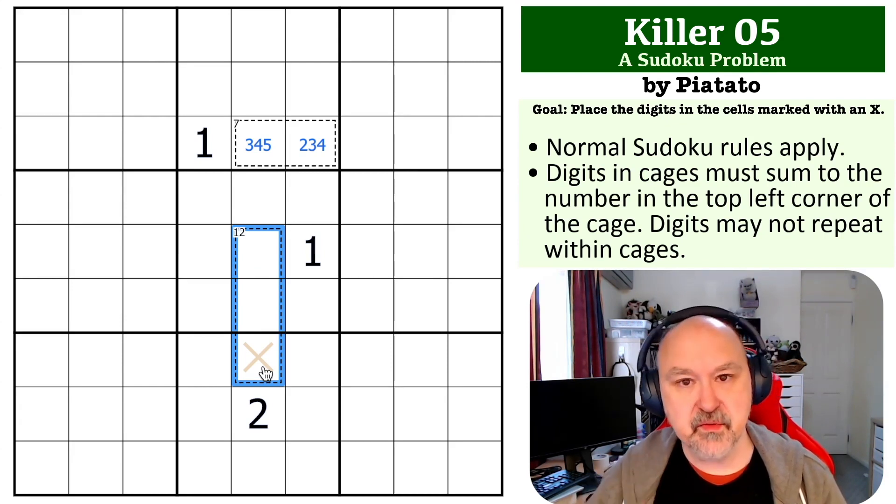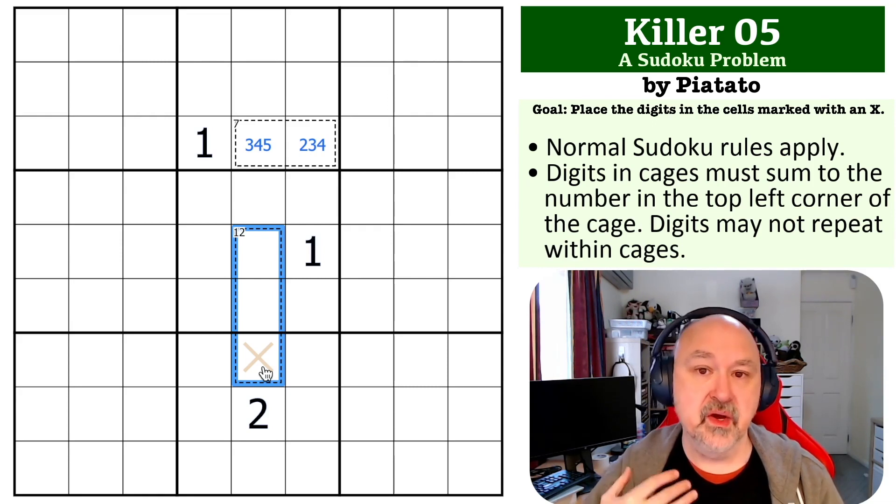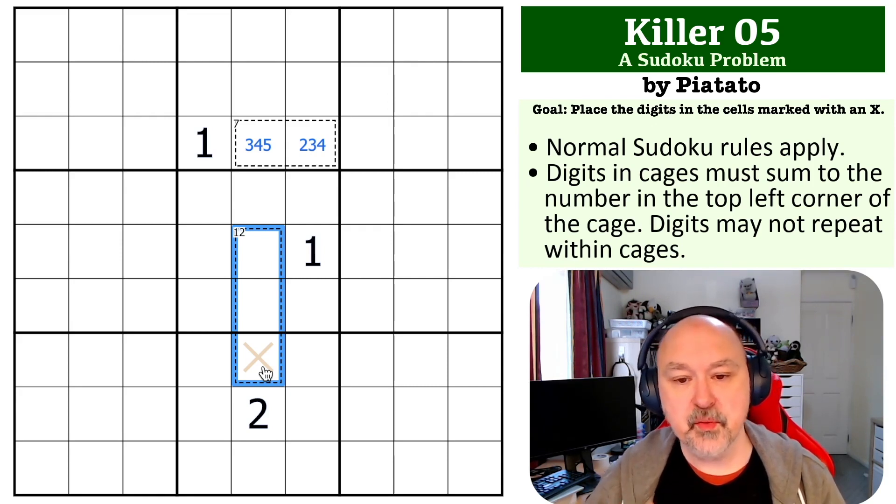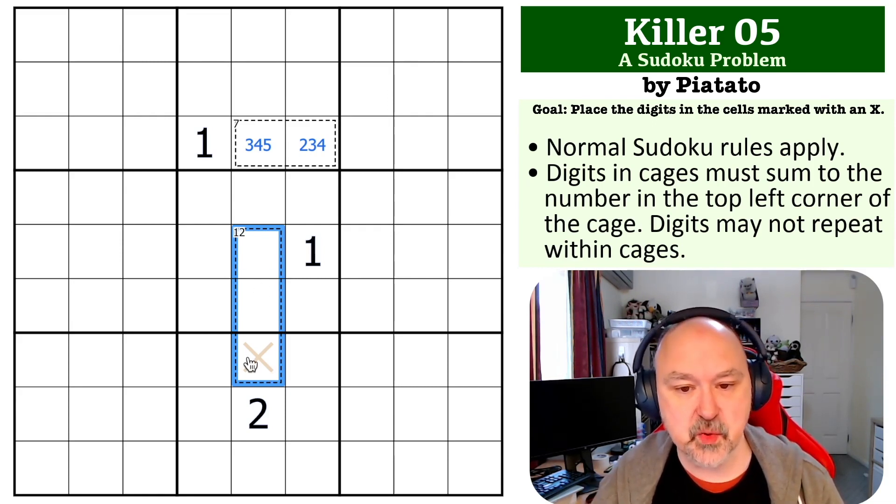So 3, 4, 5 are the minimum digits if you don't use a 1 or a 2. We can't use a 2, 3, 4, 5 sums to 12, but we can't use 3, 4, 5 in this 12 cage.